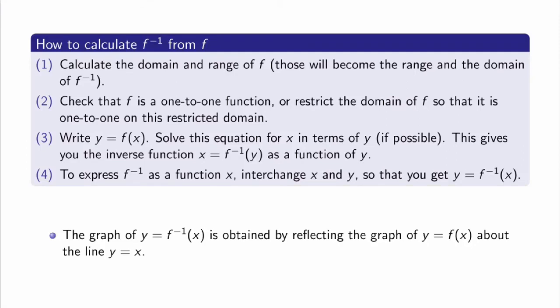Let me summarize how to calculate the inverse of a function f. Step 1: calculate the domain and range of f, since those become the range and domain of the inverse. Step 2: check that f is one-to-one; if not, restrict the domain until it is. Step 3: write y = f(x) and solve for x as a function of y — this gives x = f⁻¹(y). Step 4: exchange x and y to write f⁻¹ as a function of x. Finally, the graph of the inverse is always obtained by reflecting the graph of f about the line y = x.